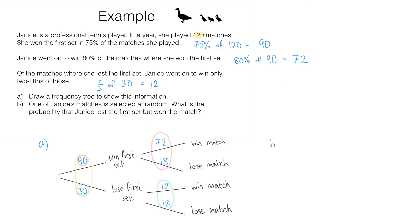Well, there were 120 matches altogether. Out of those 120 matches there were only 12 matches where she lost the first set but went on to win. We're following this path on the frequency tree and we're dealing with 12 matches. So the probability that one of these matches that was picked at random is one of these 12 matches is simply 12 over 120.